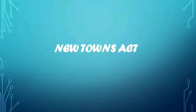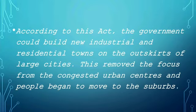According to the New Towns Act, the government decided to build new industrial and residential towns on the outskirts of large cities. This was done because they wanted people to not live in congested urban centers, so this helped people move to the suburbs.